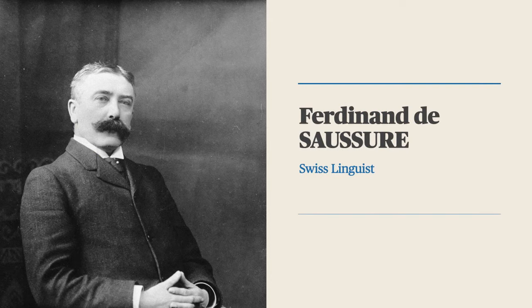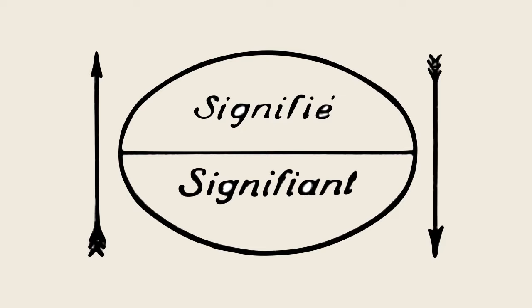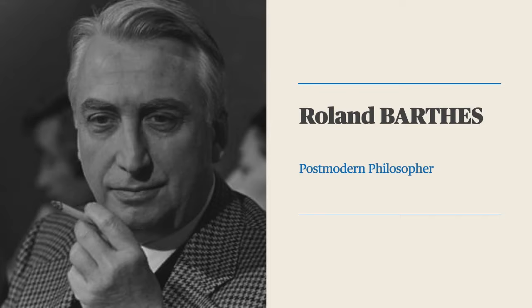Much of semiotic confusion started with this man, the Swiss linguist Ferdinand de Saussure, who had the idea of projecting linguistic terminology onto the realm of semiotics in general. Especially his distinction between signifier and signified would be influential to French philosophers of later generations. Most prominent among them, pop culture philosopher Roland Barthes, whose teachings are still treated like holy scriptures around media academies.